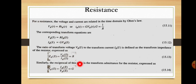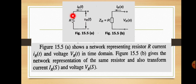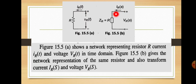When considering the impedance, the impedance is the resistance itself; when considering the admittance, the admittance is the conductance G. We can draw the time domain circuit and transform domain circuit for the resistor. In the time domain, resistor R carries current ir(t) with voltage Vr(t). In the transform domain, the symbol is a rectangular box with transform impedance Zr(s) = R, current ir(s), and voltage Vr(s).